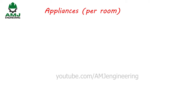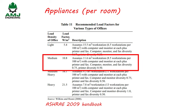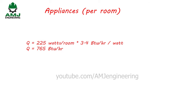The last step is to calculate the heat load from appliances. Per ASHRAE Fundamentals 2009, Table 11, offices with medium load density have 10.8 W/m² (approximately 1 W/ft²). For 225 ft² per room, that is 225 watts per room, giving Q = 765 BTU/hr per room.